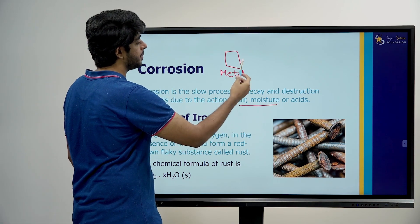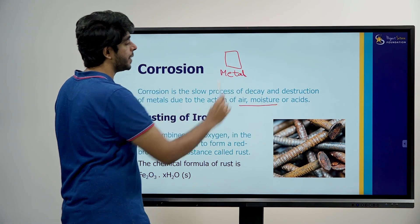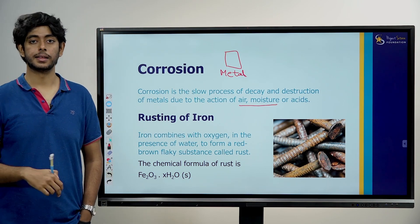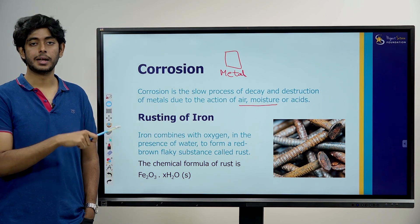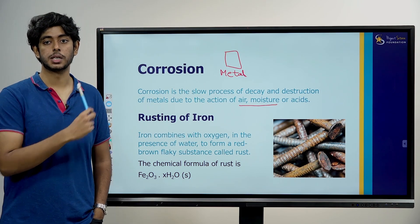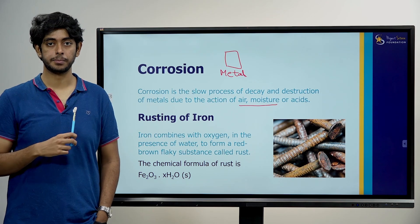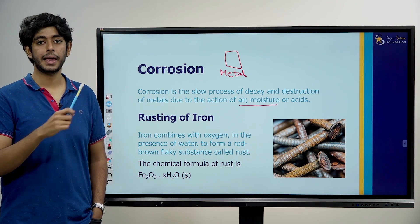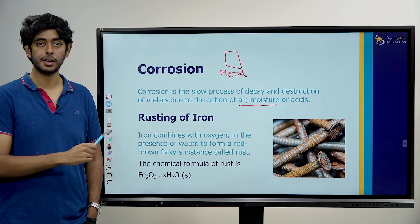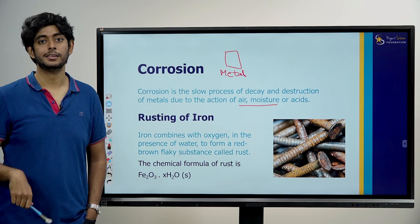If you have acid and a metal, the acid corrodes the metal. So corrosion happens to metals. One main example of corrosion is rusting.